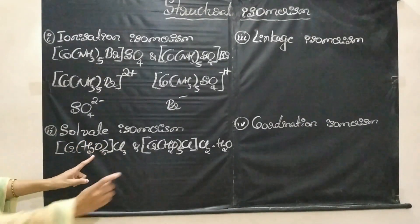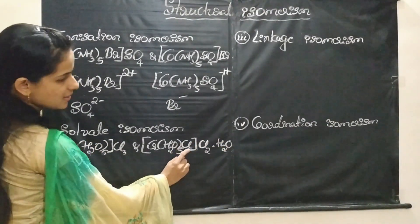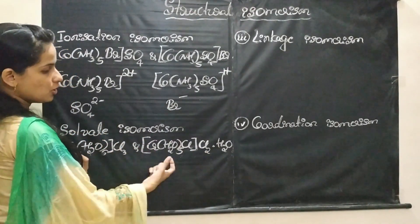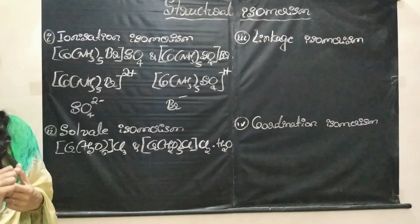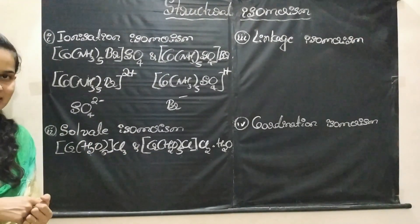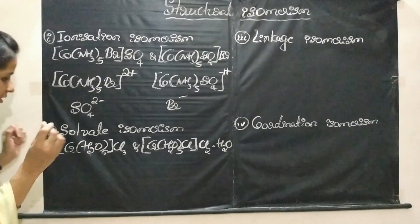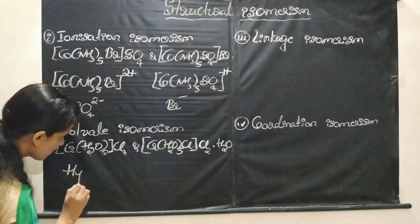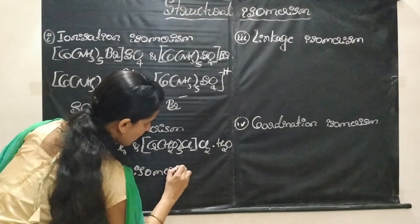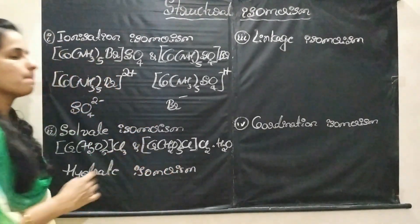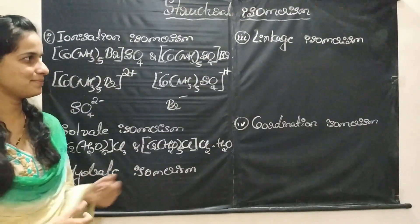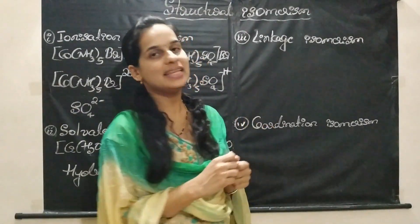The molecular formula of both complexes is the same, but they have a different number of solvent molecules acting as ligands. If the solvent is water, we call it hydrate isomerism. These are examples of hydrate isomers or solvate isomers.